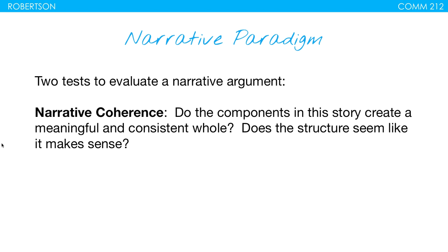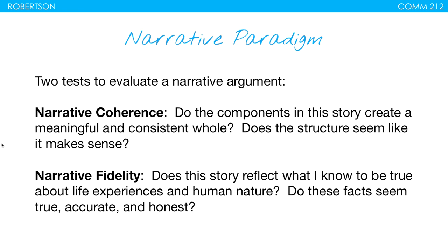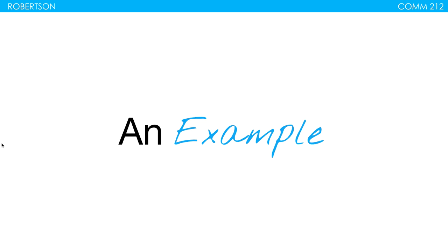There are two tests to evaluate a narrative argument. First, narrative coherence — this is understanding the structure of the story itself: do the components create a meaningful and consistent whole, and does the structure seem like it makes sense? Second, narrative fidelity — does this story reflect what I know to be true about life experiences and human nature? Do the facts seem true, accurate, and honest? So narrative coherence asks 'does this story make sense?' while narrative fidelity asks 'does this seem like how it would actually happen?'